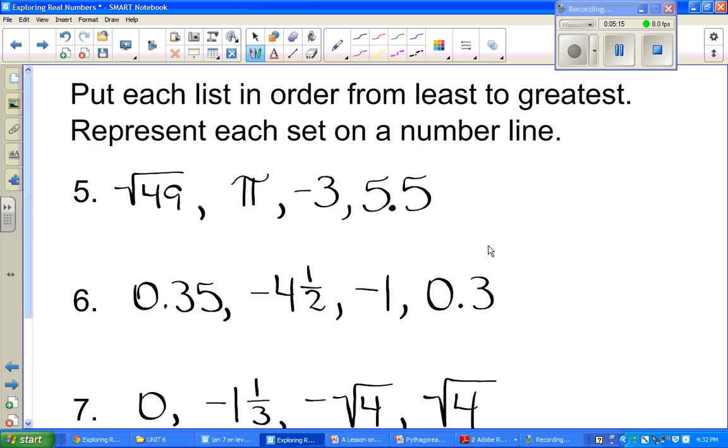Let's go to the next page. We have number 5. It says, put each list in order from least to greatest. Represent each set on a number line. Well, the first thing that we want to do with each of these is get these as simple as we can. We need to review, or we have already reviewed square root of 49. Square root of 49 is, write that underneath it, 7. Remember, 7 is a rational number.